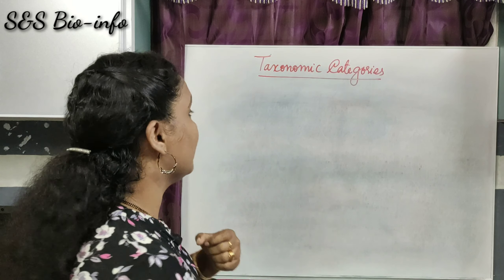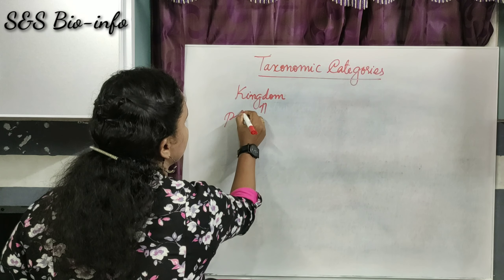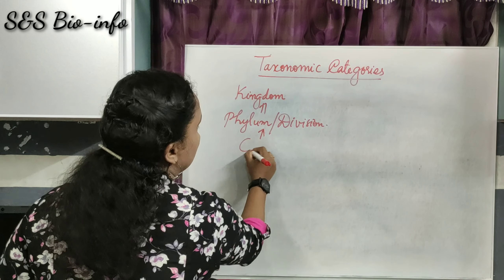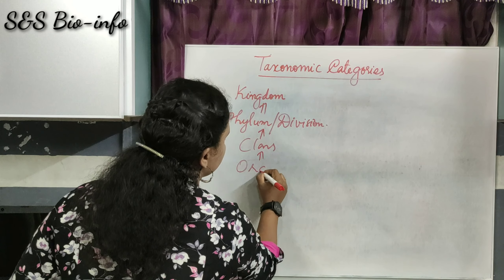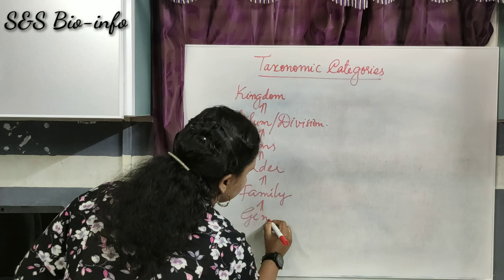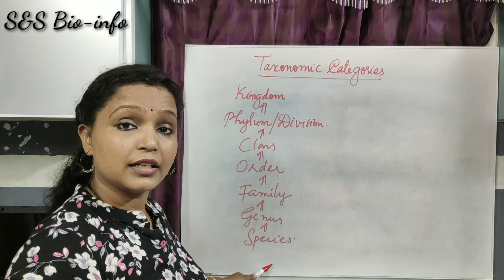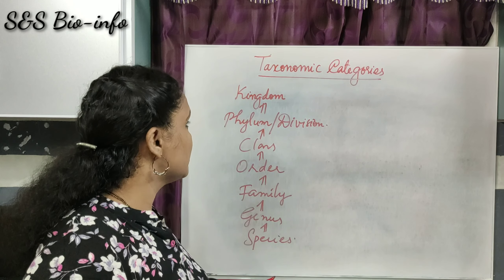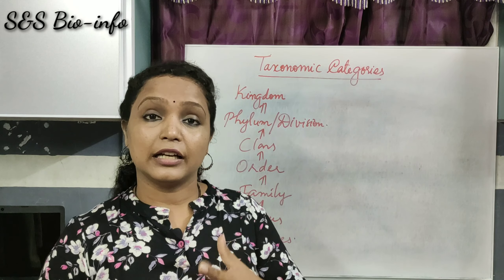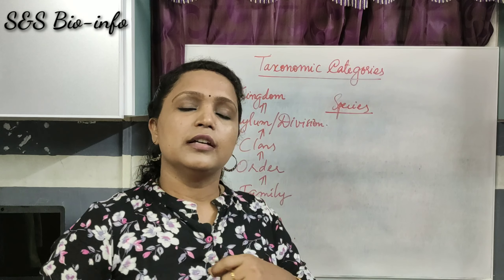The taxonomy categories are: Kingdom, Phylum (for animals) or Division (for plants), Class, Order, Family, Genus, and Species. Here, Species is the lowest category with the most number of similar features, while Kingdom is the largest or highest category with more differences.